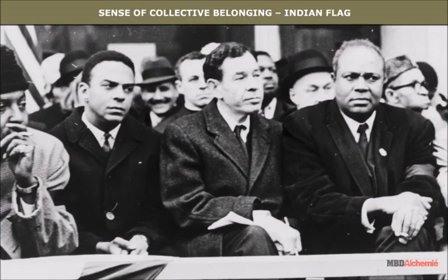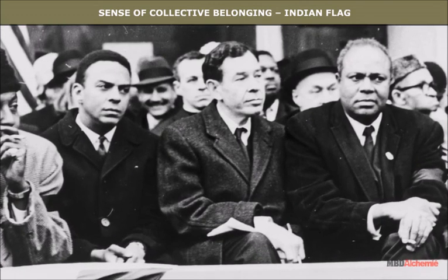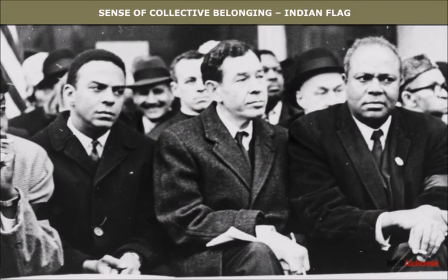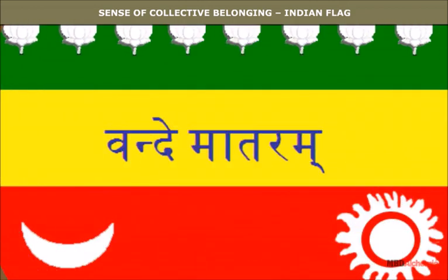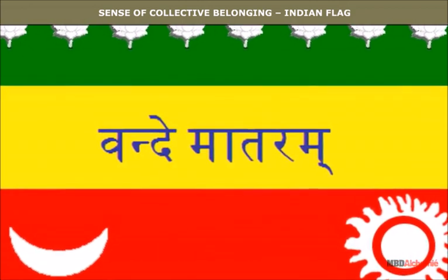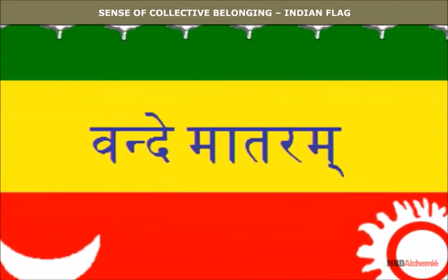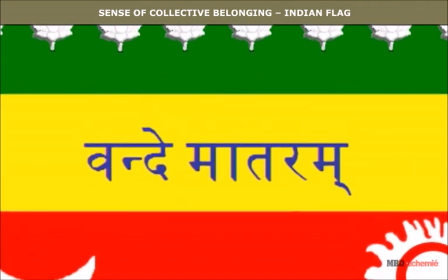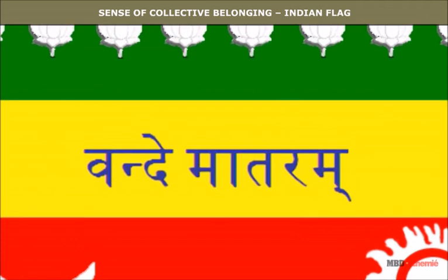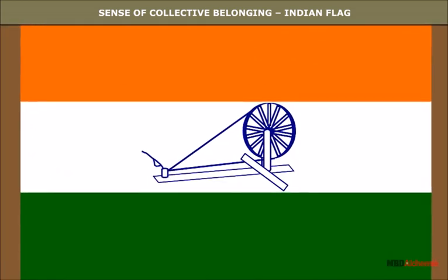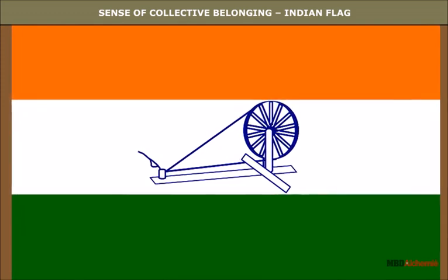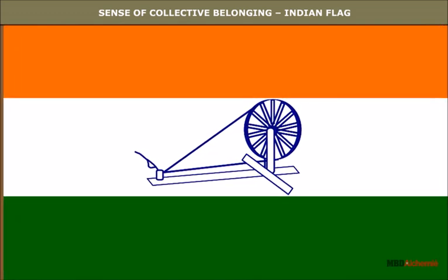Sense of Collective Belonging — Indian Flag: As the national movement developed, nationalist leaders became more and more aware of icons and symbols in unifying people and inspiring a feeling of nationalism. During the Swadeshi movement in Bengal, a tricolour flag — red, green and yellow — was designed by Madam Bhikaji Cama. It had eight lotuses representing the eight provinces of British India and a crescent moon representing Hindus and Muslims. By 1921, Gandhiji had designed the Swaraj flag — again a tricolour: red, green and white — with a spinning wheel in the centre representing the Gandhian ideal of self-help. Carrying the flag and holding it aloft during marches became a symbol of defiance.